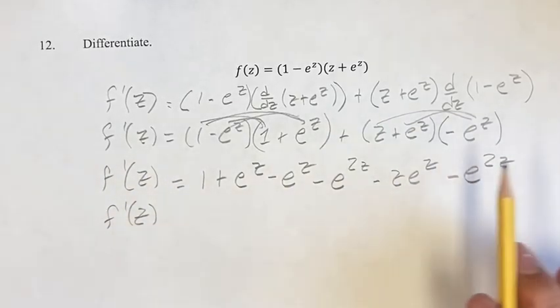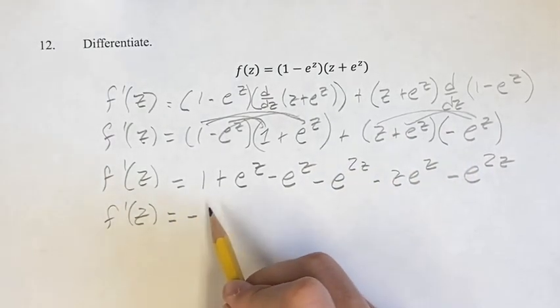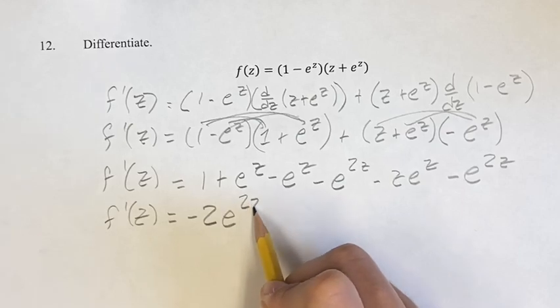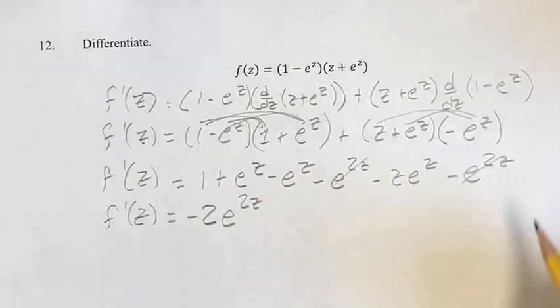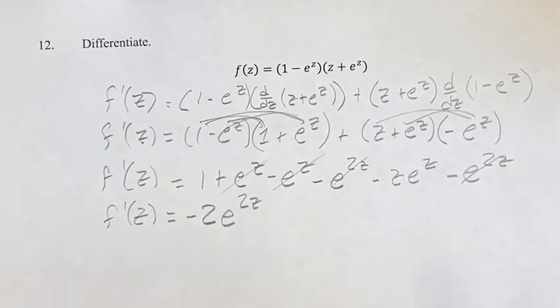So we have minus e to the 2z, minus another e to the 2z. So that's going to be negative 2 e to the 2z. Just crossing out these terms so we don't double count. And then we have e to the z minus e to the z. Those cancel out.